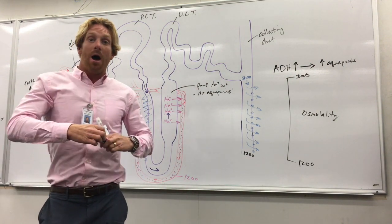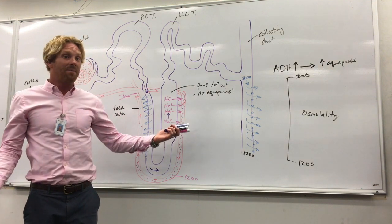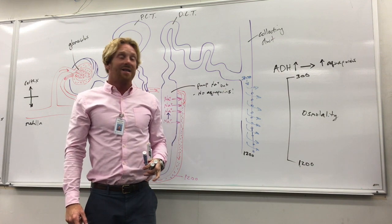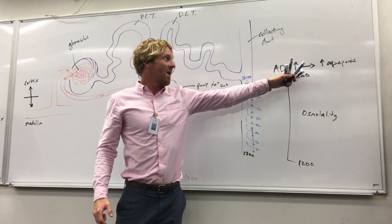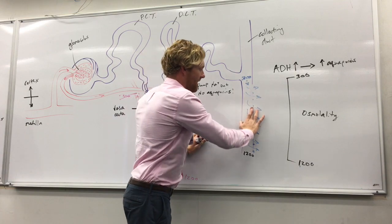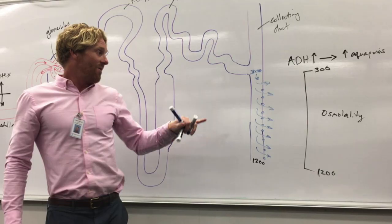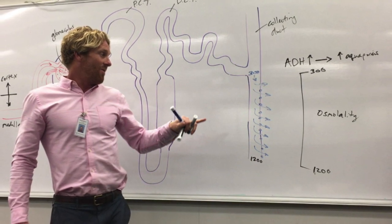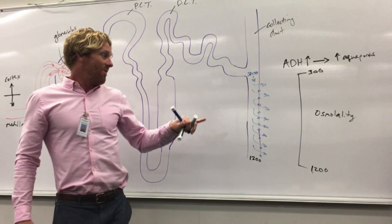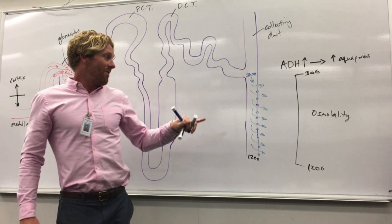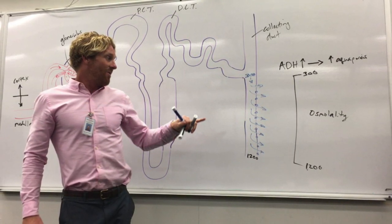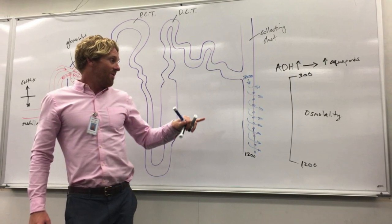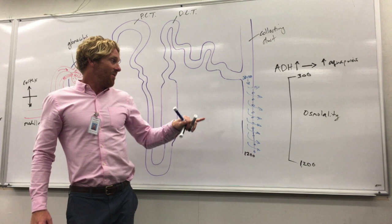When we're overhydrated, something simple happens: the posterior pituitary stops releasing as much ADH. That decreases the number of aquaporins in the collecting duct, so water can't leave the collecting duct no matter how salty the surrounding fluid is. All that extra water gets dumped into the ureter and ultimately the bladder, getting rid of the excess water we don't need.